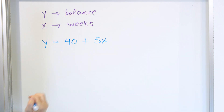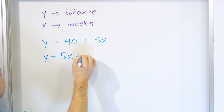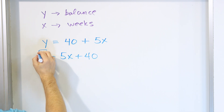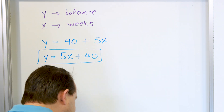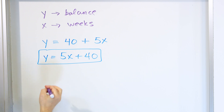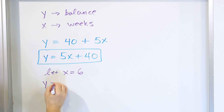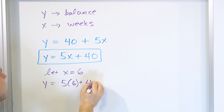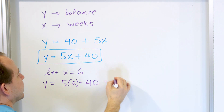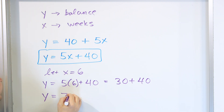This is the equation of a line. We usually write it as MX plus B: Y = 5X + 40. This is the equation of the line that represents the situation. Now, how much after six weeks? We let X, the number of weeks, equal to six. The balance is five times six, which is 30, plus 40. So the total balance is $70.